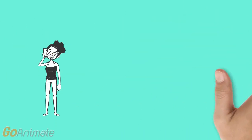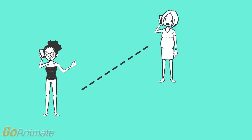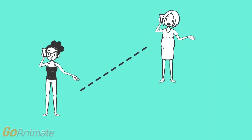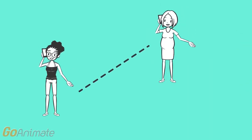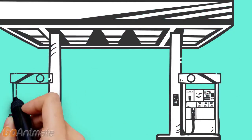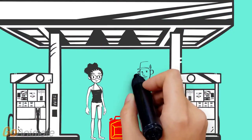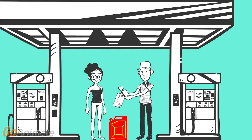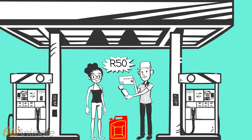The next day Nandi is very excited because she gets a call from one of her uncle's friends to say she should come and mow her lawn. Nandi needs petrol for the lawnmower, so she first goes to the garage and uses the debit card for her business bank account and buys 50 rand's worth of petrol.